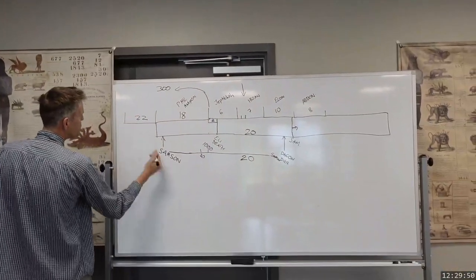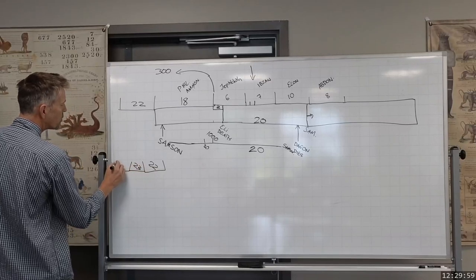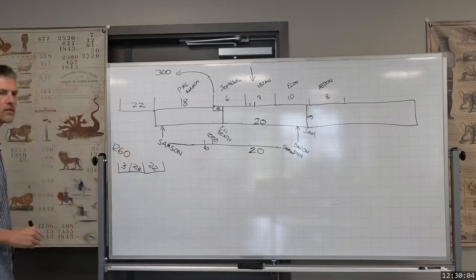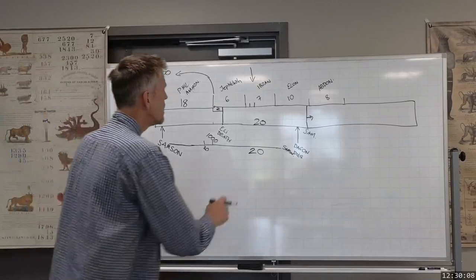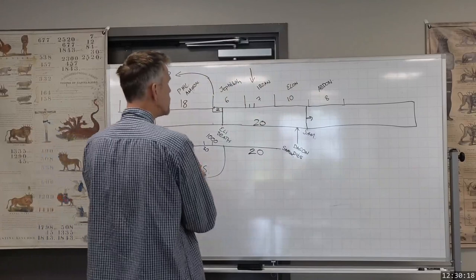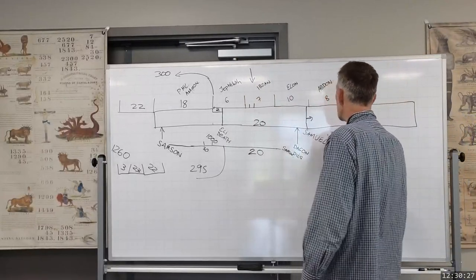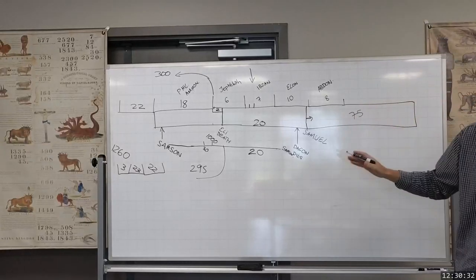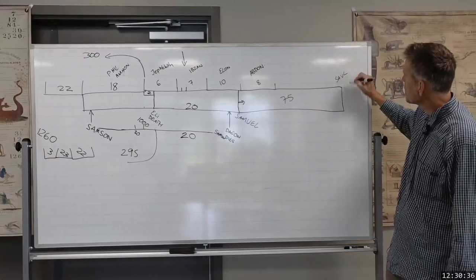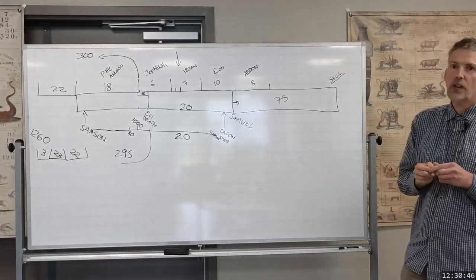Where did we put 1260 BC? We placed that with Tola — so you have 22 years of Jair, 23 years of Tola, and then three years of Abimelech — and that would be 1260. In shortening the period to 295 years of the ark being in Shiloh, this would therefore extend the period of Samuel to 75 years, being 75 years old when Saul is anointed. So he's going to live more near 140 years in that case. That would be a consequence. Any comments or thoughts? Okay, so we'll close in prayer.